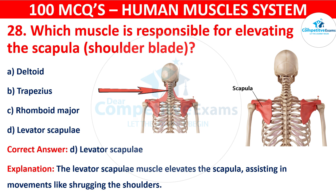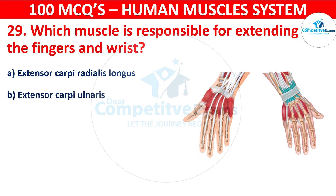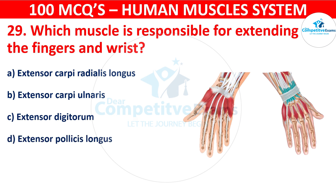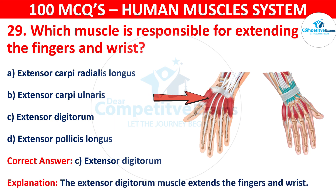Question 29. Which muscle is responsible for extending the fingers and wrist? Your options are Extensor carpi radialis longus, Extensor carpi ulnaris, Extensor digitorum, or Extensor pollicis longus. The correct answer is C, i.e. Extensor digitorum. The extensor digitorum muscle extends the fingers and wrist.